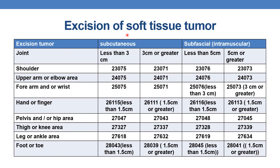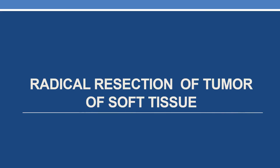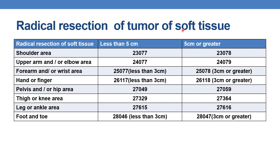Coming to radical resection of tumor of soft tissue. For radical resection of tumor of soft tissue of shoulder area: if the diameter is less than 5 centimeters, CPT is 23077; if 5 centimeters or greater, it is 23078. For upper arm and/or elbow area: if less than 5 centimeters, CPT is 24077; if 5 centimeters or greater, it is 24079.